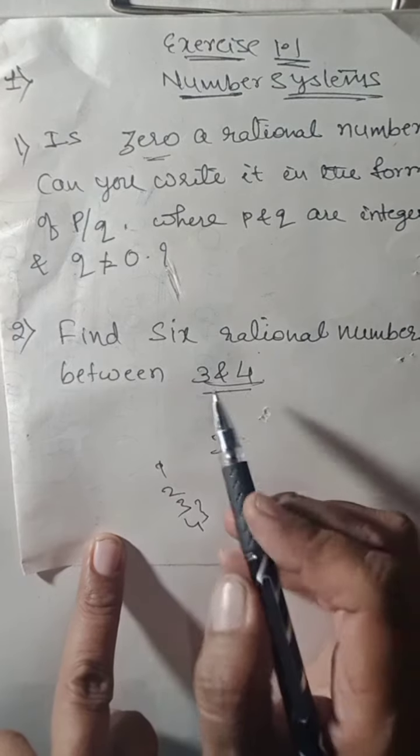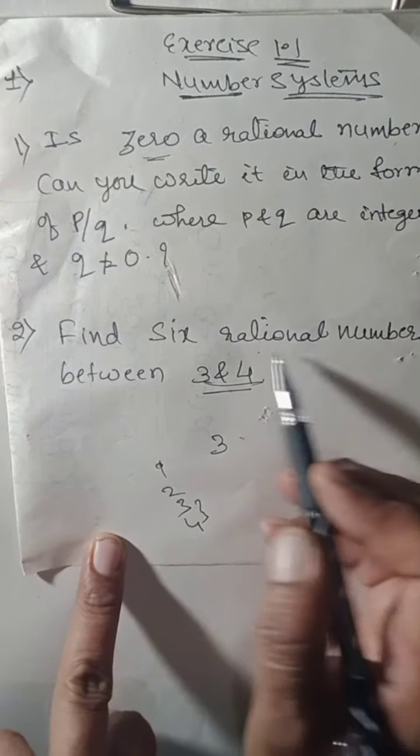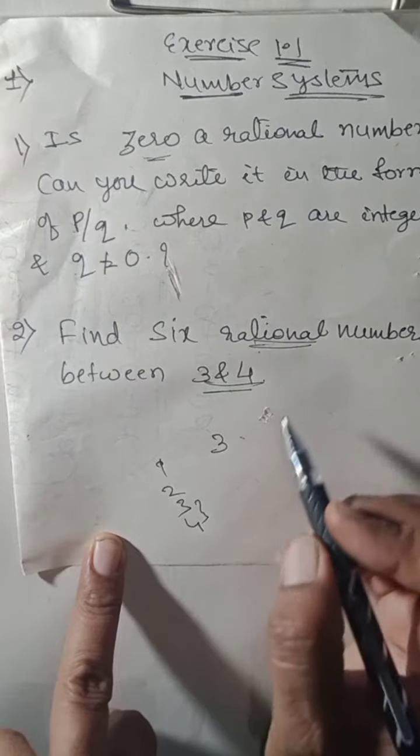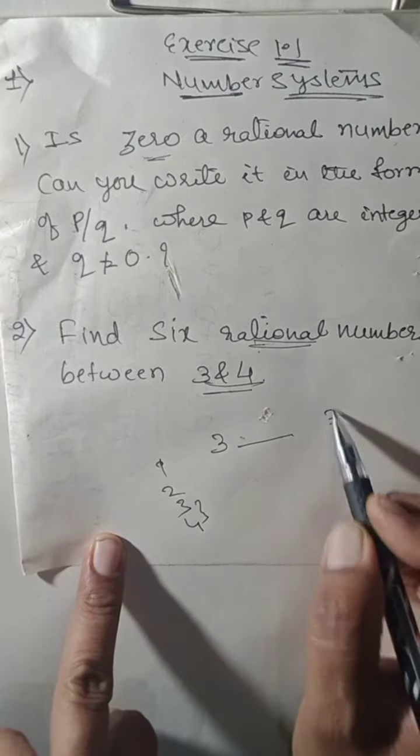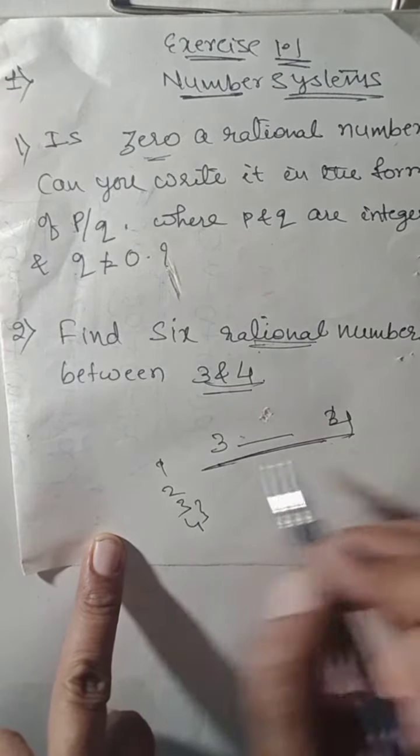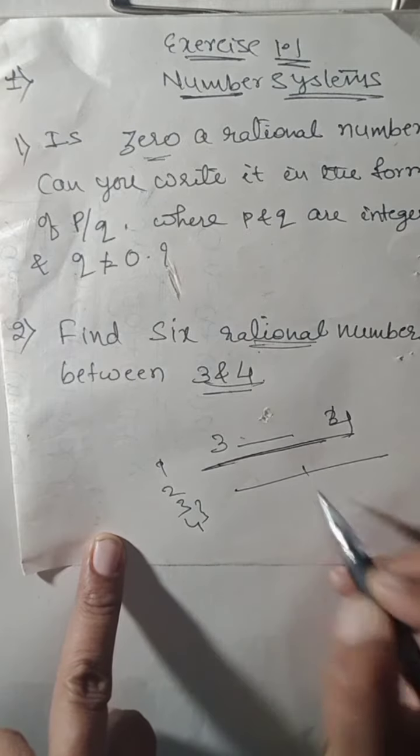We won't find any natural numbers between 3 and 4, but they are asking for rational numbers. Between 3 and 4, we have uncountable rational numbers here.